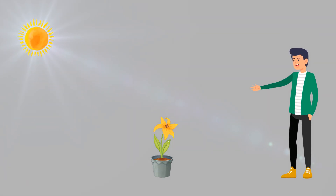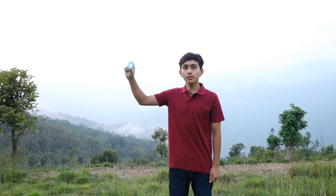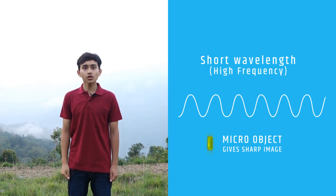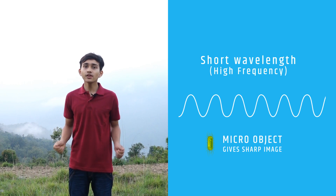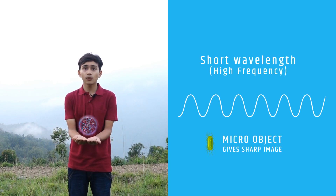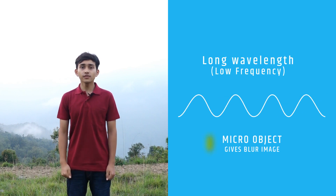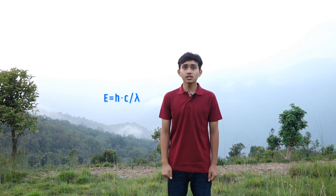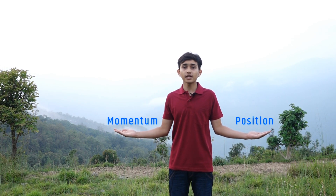A macroscopic object can easily be observed and located as the light incident on the object gets reflected to our eyes. But as soon as we try to observe a microscopic object, a problem arises. When we attempt to measure the position of a microparticle, we tend to use a light wave with shorter wavelength due to the extremely small size of the particle, since a longer one will create a blurred image. But to measure the momentum of the object at that very instant, we need a light wave with minimum energy and hence longer wavelengths, so as to not alter the motion of the particle. Hence, we can either choose to measure the position or the momentum of the particle accurately.